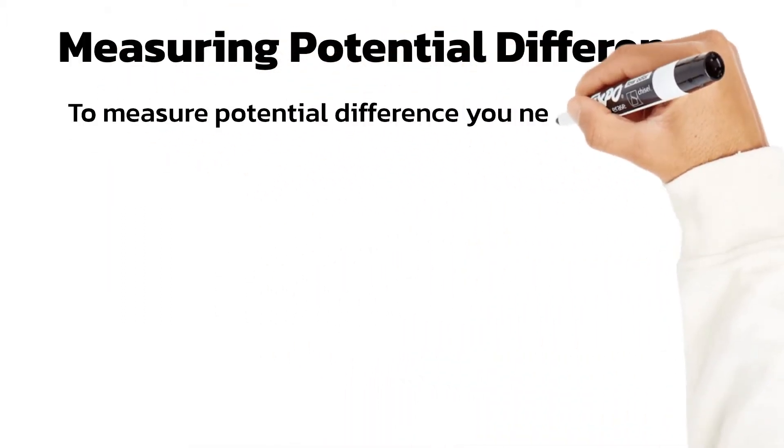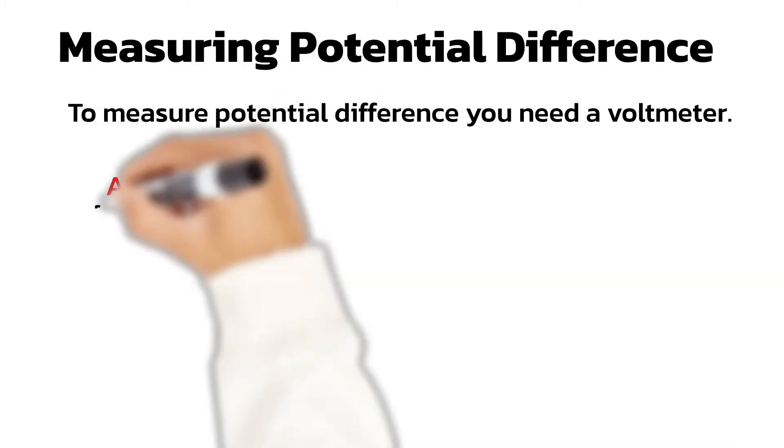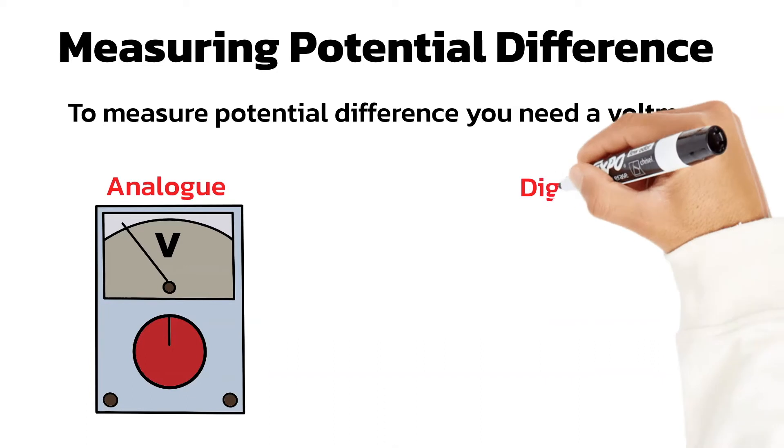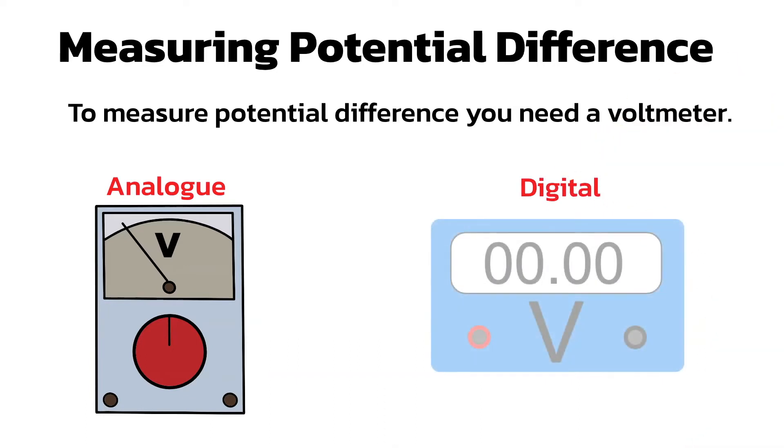To measure the potential difference in a circuit you need to use a voltmeter. The two main types are called analog, which have a needle moving along a scale, and digital, which use an LCD readout.